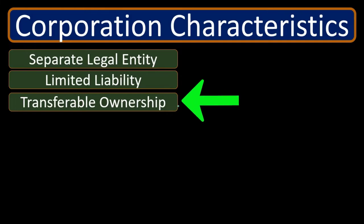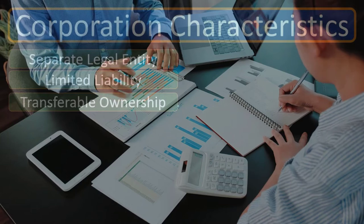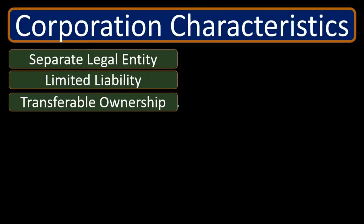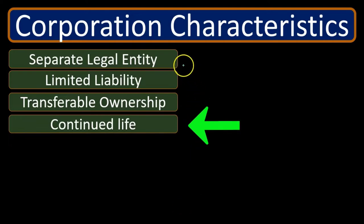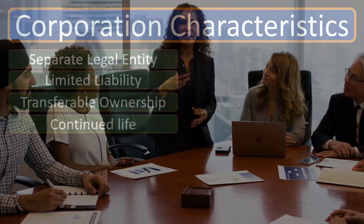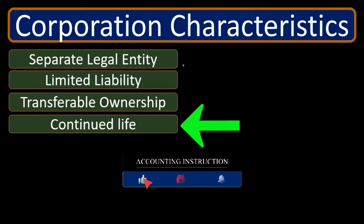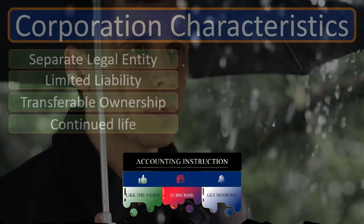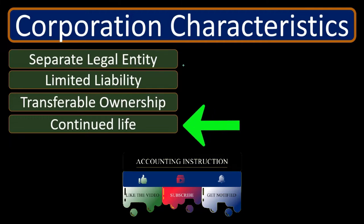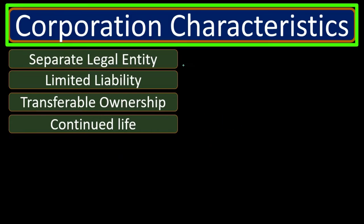Transferability is something we don't have as easily in a partnership. In a partnership, adding a new partner or selling your interest typically requires approval from the other partners and is a complex transaction. For a corporation, because all stocks are the same, buying and selling corporate stock becomes much easier. We also have continued life, again stemming from the separate legal entity concept. For a partnership or sole proprietorship, if someone dies or a partner quits, that basically ends the partnership and it needs to be reformed. For a corporation, that's not the case.